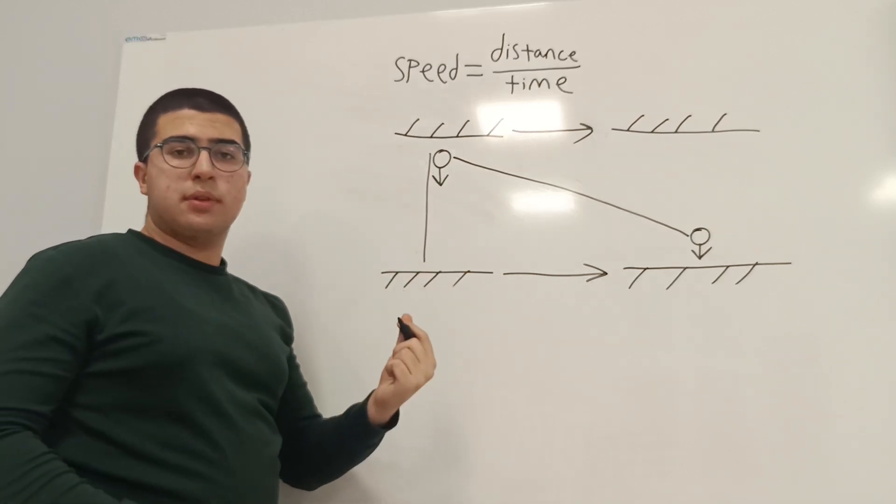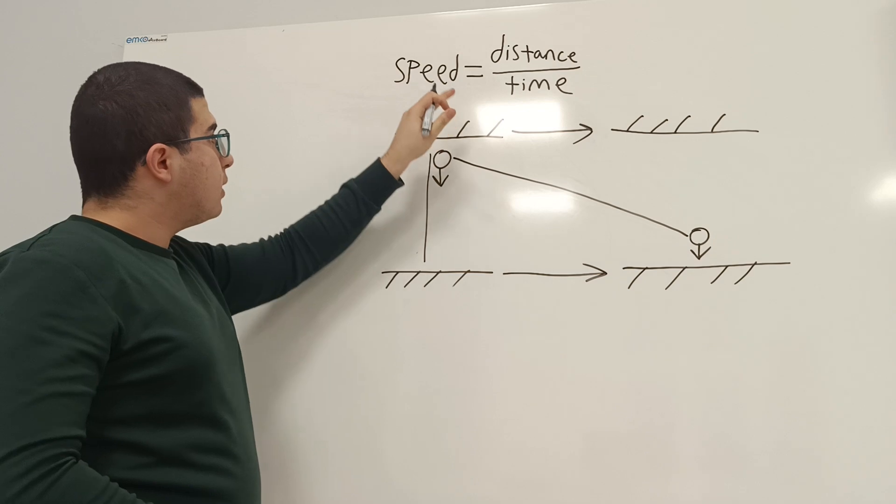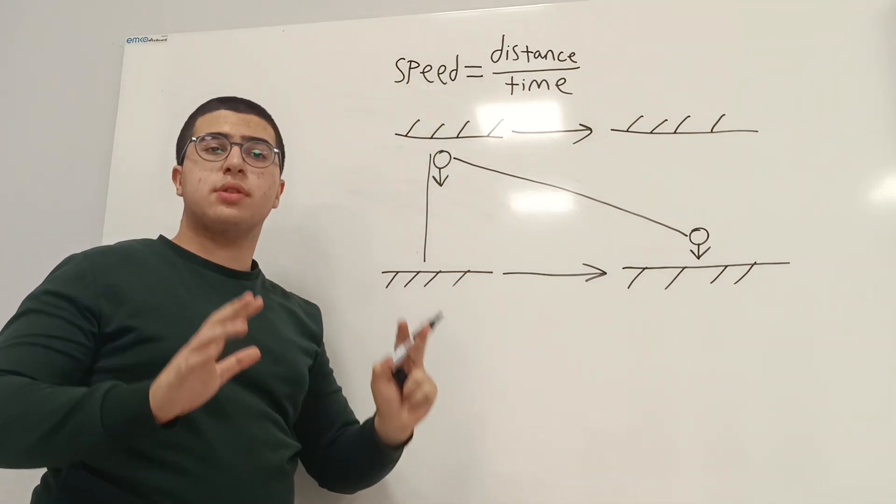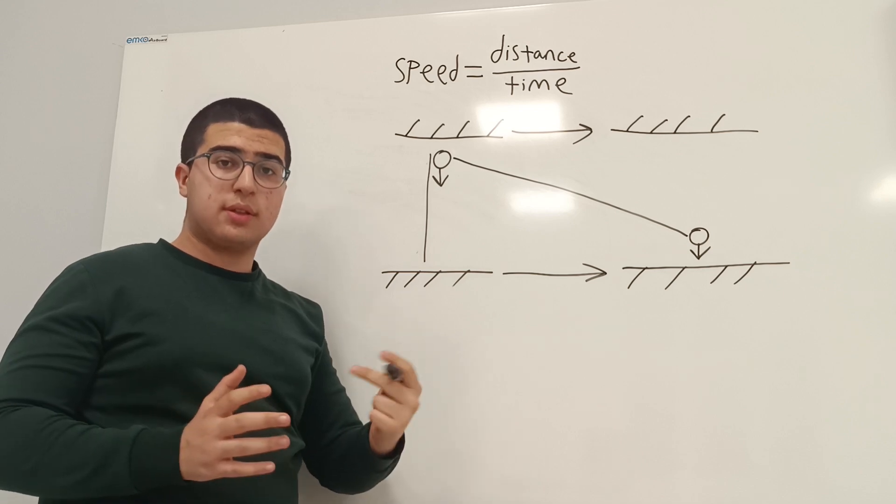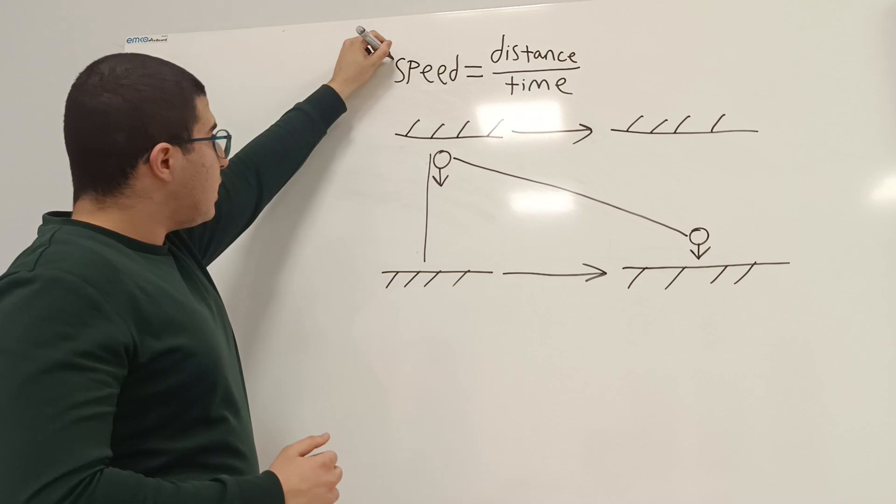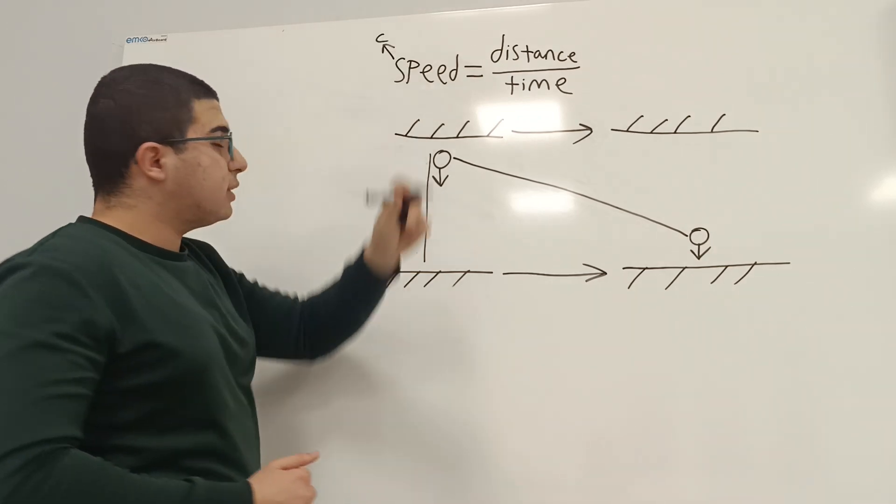But it can't happen, because speed of light is the same for all inertial reference frames. This is one of the postulates of special relativity. Speed is constant, it can't change, it's always c.